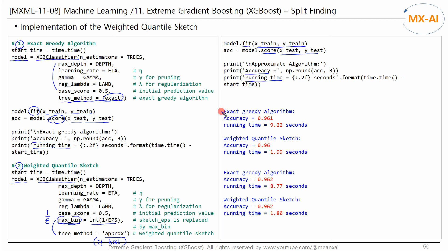The results are as follows. For the exact greedy algorithm, the accuracy is 0.961. The running time is 9.22 seconds. For the weighted quantile sketch algorithm, the accuracy is 0.96. It took 1.99 seconds to run. The accuracy is similar, but the running time is much shorter. Run it one more time. The accuracy is the same, but the execution time is this short. This is the effect of the weighted quantile sketch algorithm.